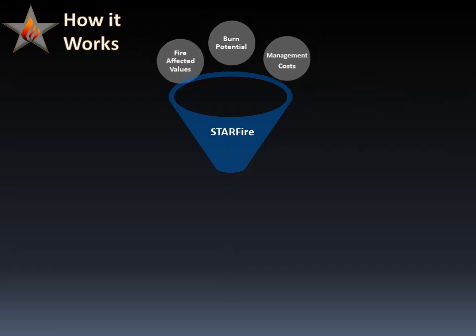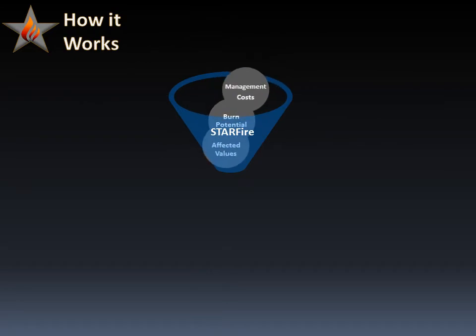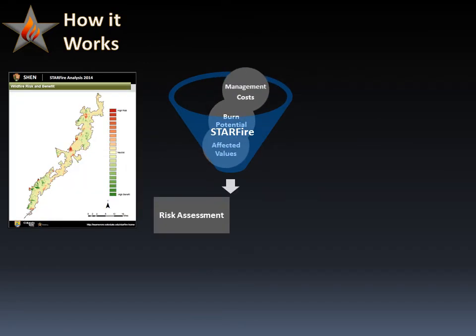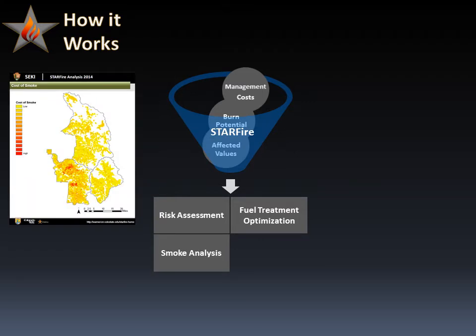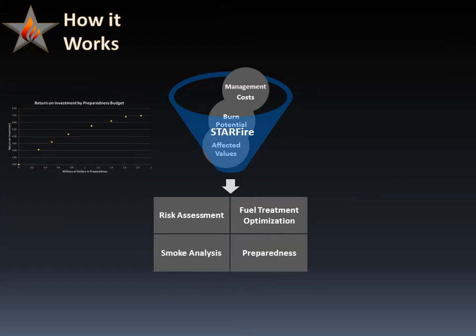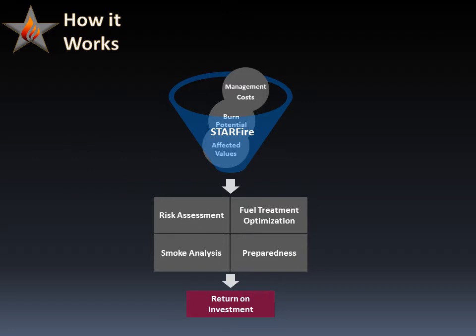Starfire combines this information to generate four outputs: a risk assessment that identifies where fire can provide benefit and where it imposes risk; a fuel treatment assessment that identifies the optimal places for fuel treatments; a smoke assessment that considers the impacts of smoke; and a preparedness analysis that assesses the return on investment for alternative preparedness strategies and budgets. The return on investment for each of these four programs is generated to support and evaluate their viability.